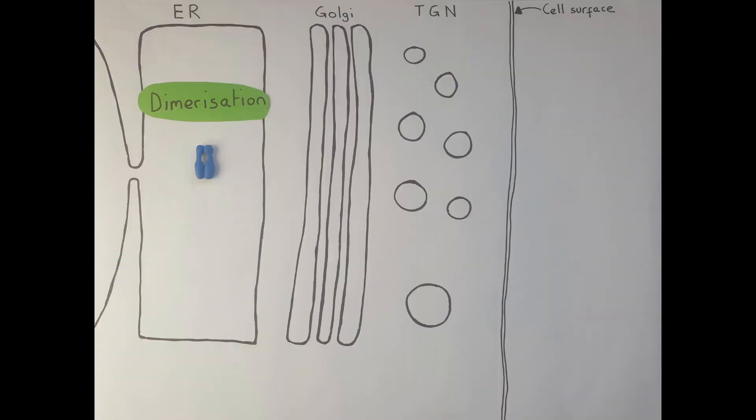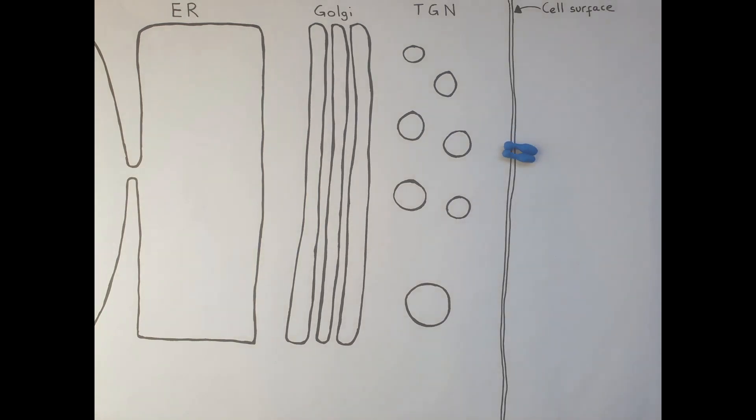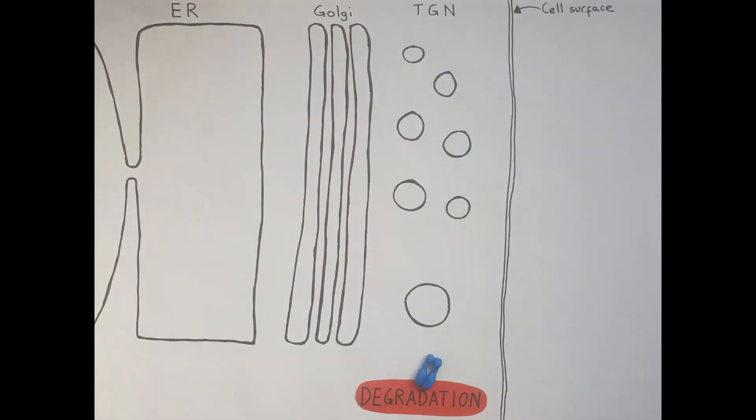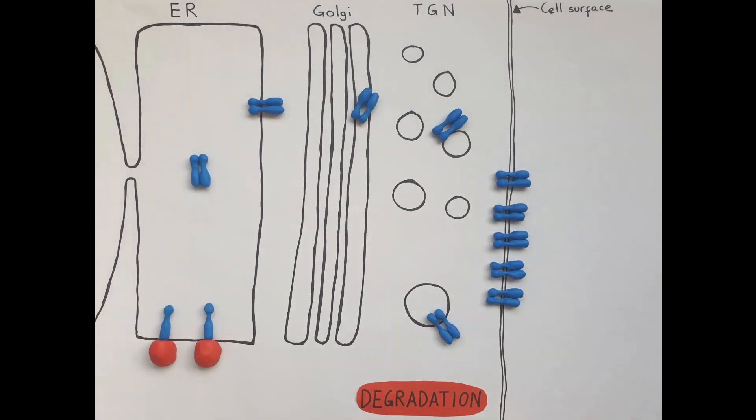They then travel to the cell surface via compartments of the secretory pathway and the transgolgi network. Cells also continuously remove and degrade insulin receptors at the cell surface.